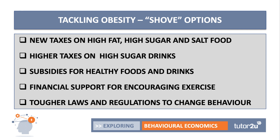Sometimes nudges alone aren't enough — you have to shove consumers through financial incentives. This includes high taxes on high fat, high sugar, and salt foods, as well as high taxes on high sugar drinks, which have of course come into the UK. Or perhaps going the other way with subsidies for healthy foods and drinks, better local authority and government financial support for encouraging exercise, or NHS funding for people to commit to exercise regimes as a way of bringing down their weight. It may well be that the government brings in tougher laws and regulations, such as banning the sale of energy drinks to under-16s.